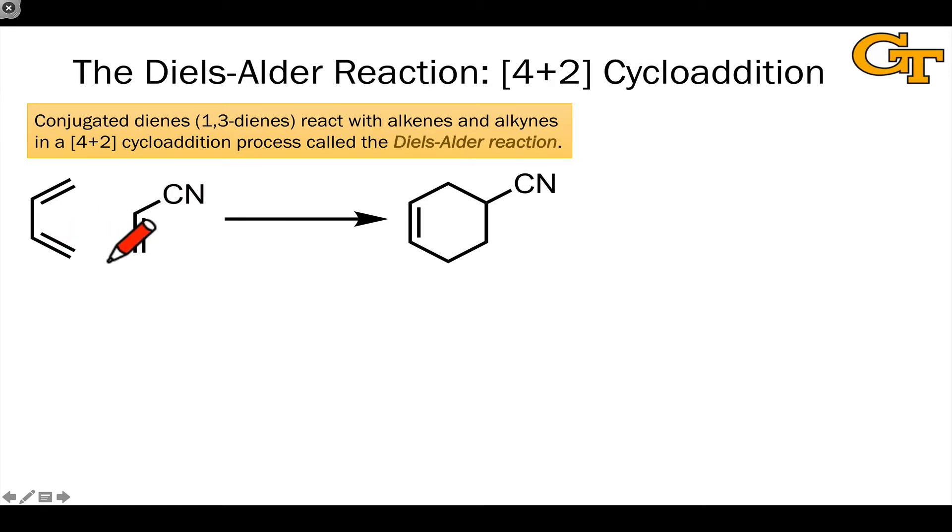We can also draw this mechanism by flowing electrons in the opposite direction, now from the two atom pi system on the bottom like this, and notice we're moving electrons in a clockwise direction. Actually both sets of curved arrows lead to the same product.